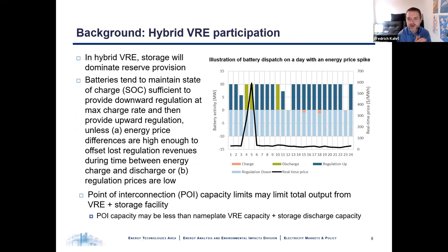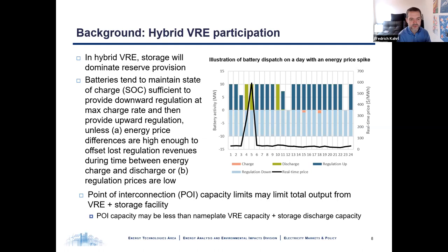For hybrids, the economics of market participation are very different and are driven by battery economics. Batteries typically like to charge up to a state of charge sufficient to provide upward and downward reserves and then just sit there, unless energy prices spike — making energy arbitrage economic — or reserve prices are really low. An interesting dimension for hybrids is point of interconnection capacity limits — the maximum power a facility can inject into the grid. In our base case, this is capped at the wind or solar facility nameplate capacity. For example, with 15 MW of solar and 10 MW of battery capacity but a 20 MW POI limit, the total energy and upward reserves that can be provided is 20 MW, affecting battery charge and discharge operations.